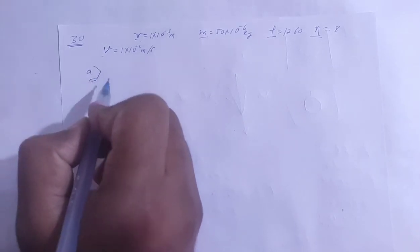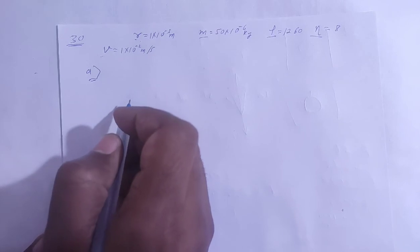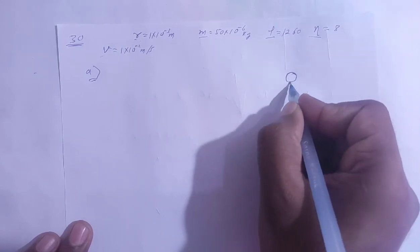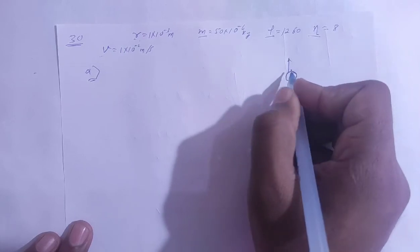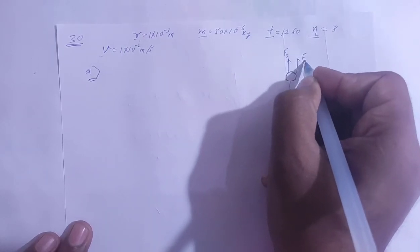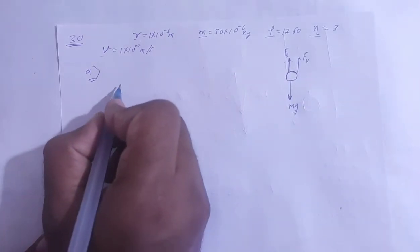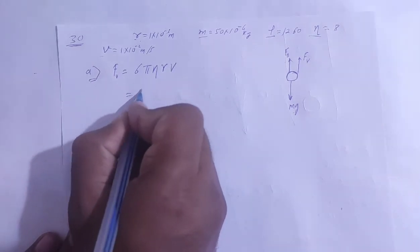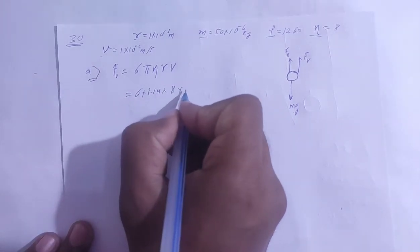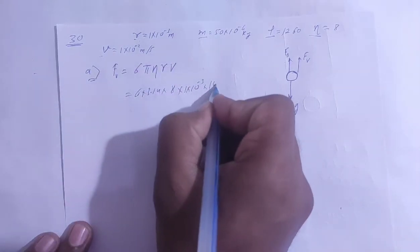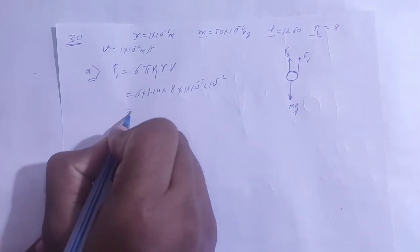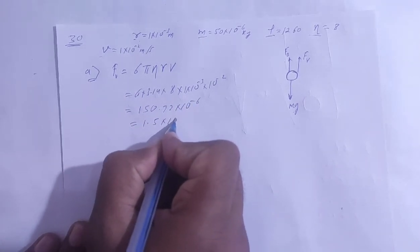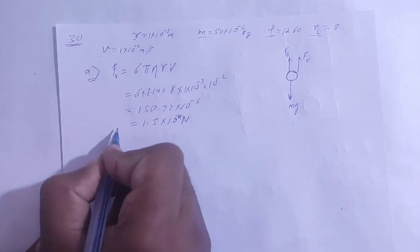For Part A, we need the viscous force exerted by glycerin on the sphere when speed is 1 cm per second. As the metal sphere falls through glycerin, the downward force is Mg and the upward forces are buoyant force and viscous force. Using Stokes' law for a spherical shape, the viscous force is 1.5 × 10⁻⁴ N.